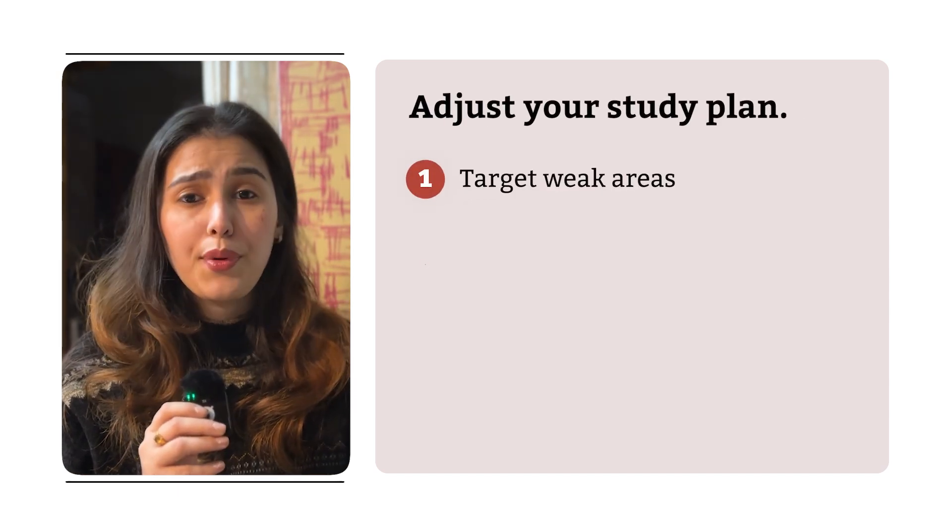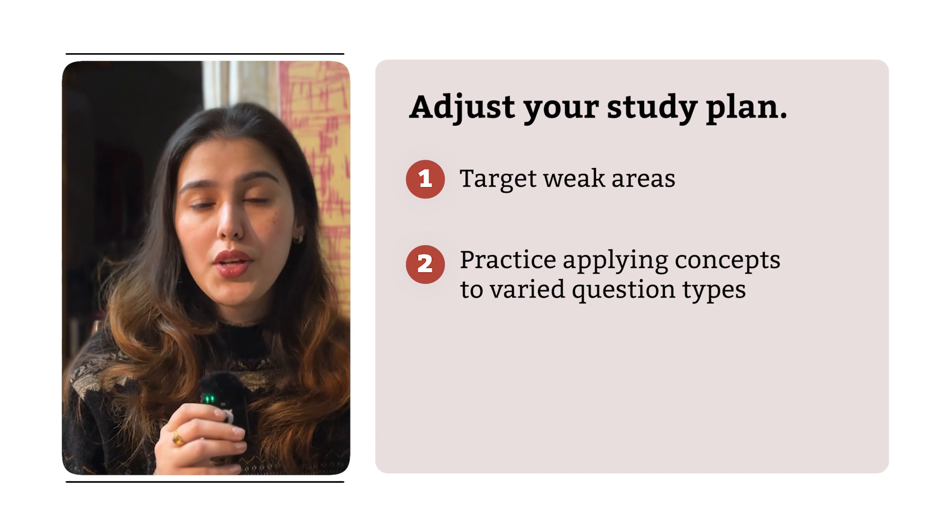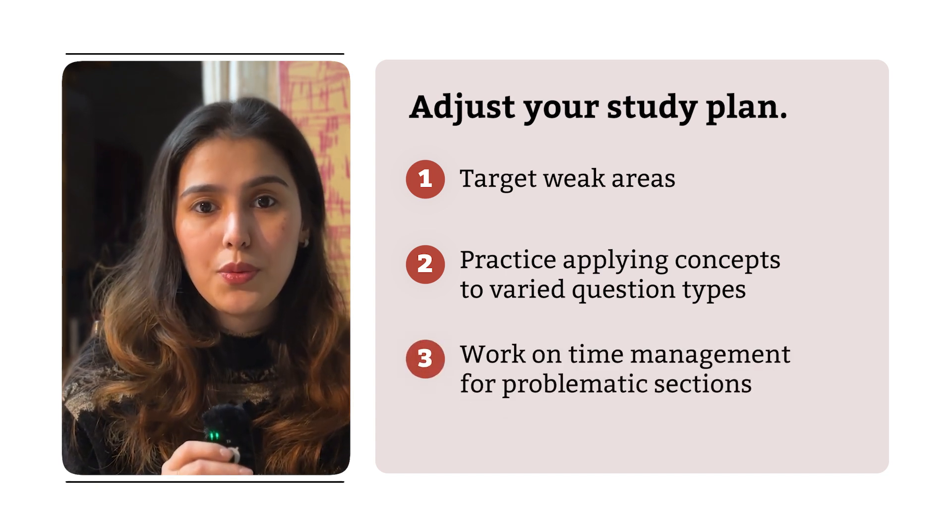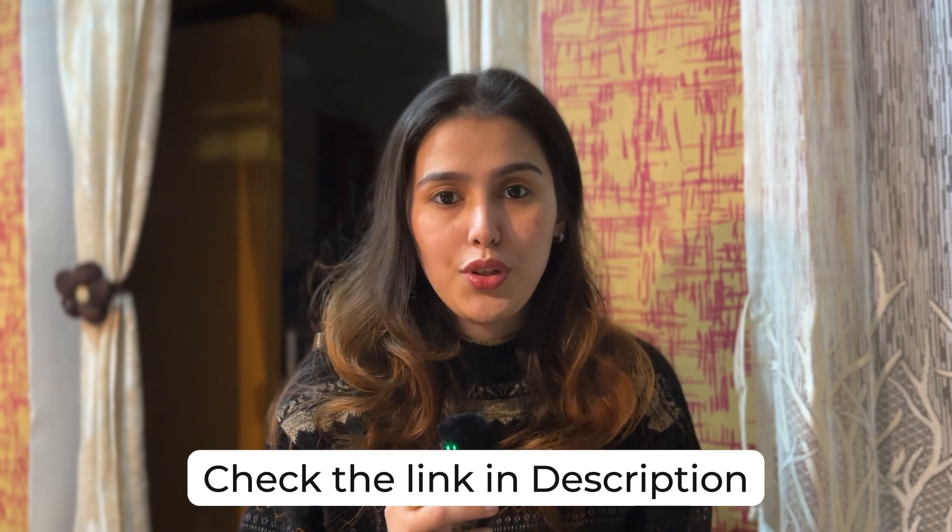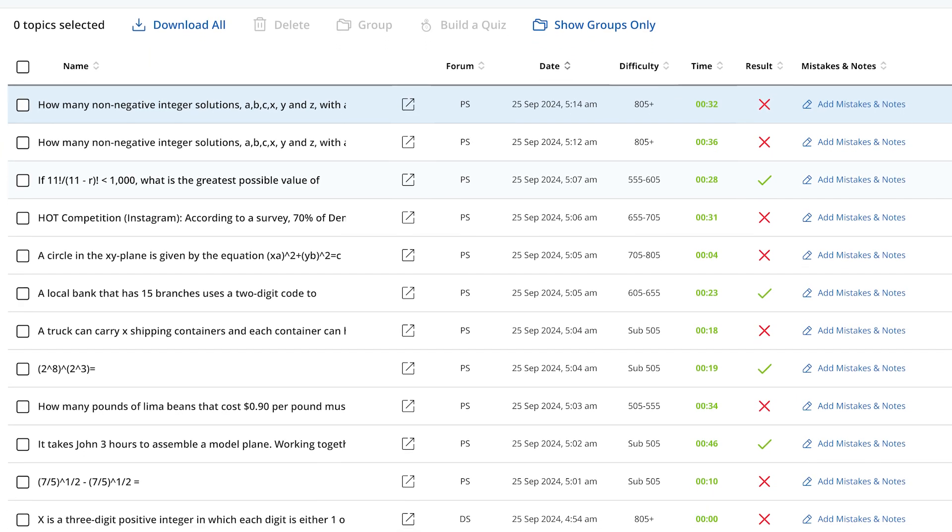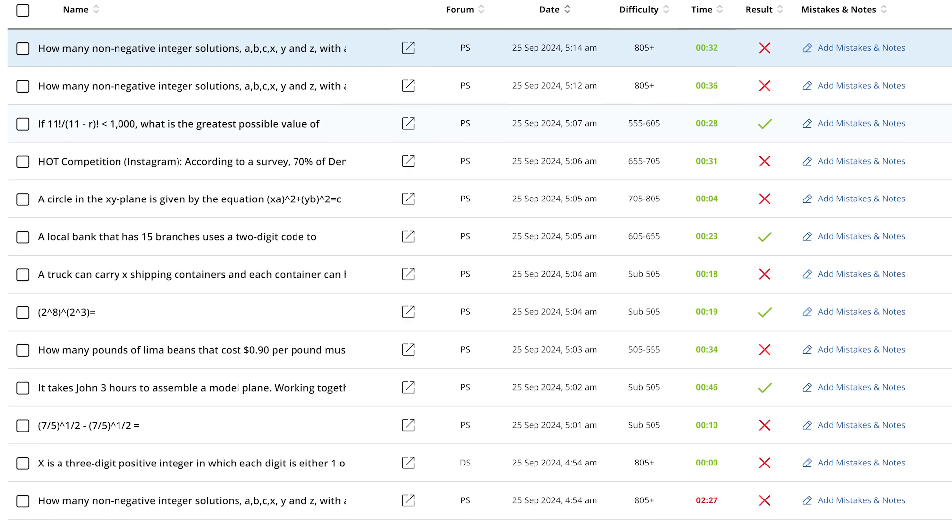Target weak areas, practice applying concepts to varied question types. Work on time management for problematic sections. Check out the link to a GMAT Club error log in the description. It automatically records all practice questions you attempt on the GMAT Club forum which has over 50,000 questions. You can then download the spreadsheet with all of the practice details such as time, topic, difficulty and a lot more.